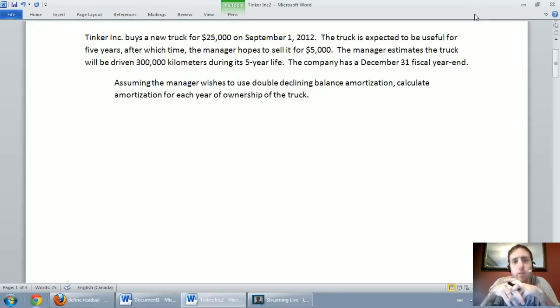Tinker Inc buys a new truck for $25,000 on September 1, 2012. The truck is expected to be useful for five years, after which time the manager hopes to sell it for $5,000. The manager estimates the truck will be driven 300,000 km during its five year life. The company has a December 31 fiscal year. Assuming the manager wishes to use Double Declining Balance amortization, calculate the amortization for each year of ownership of the truck.